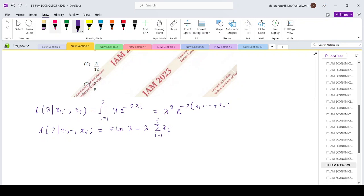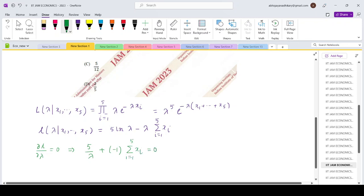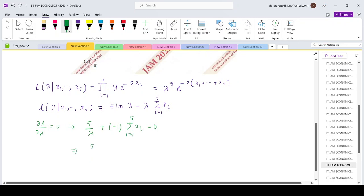For the maximum likelihood estimator we will maximize the log likelihood to choose lambda. So del l del lambda equals 0. That's 5 by lambda minus summation i running from 1 to 5 Xi equals 0. So 5 by lambda equals summation Xi.